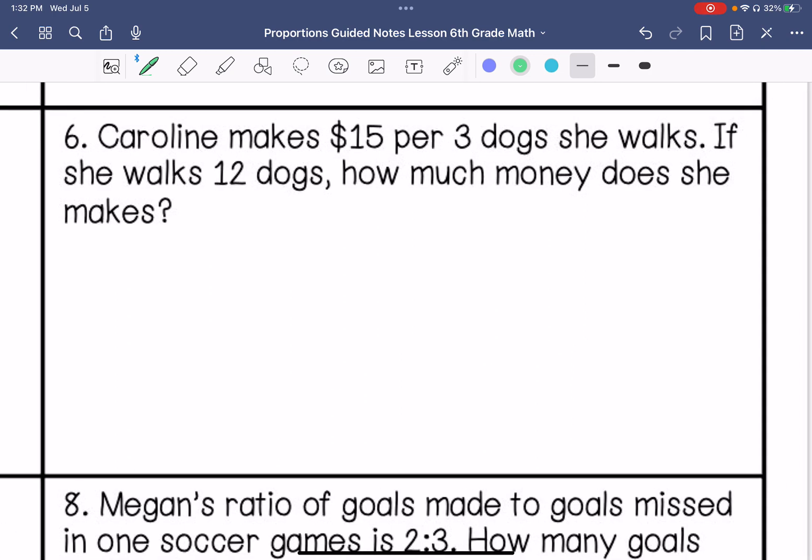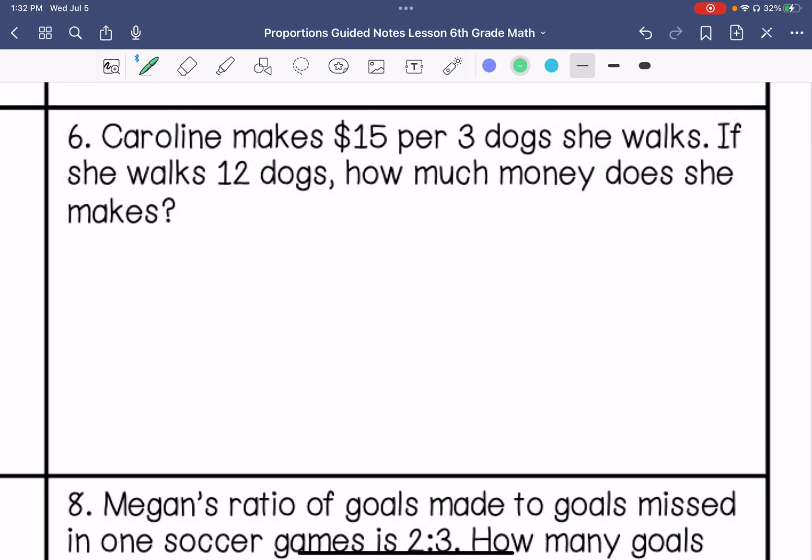All right, number 6. Caroline makes $15 per 3 dogs she walks. If she walks 12 dogs, how much money does she make?